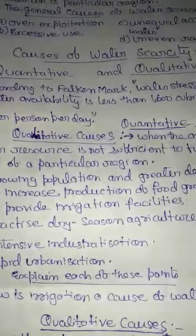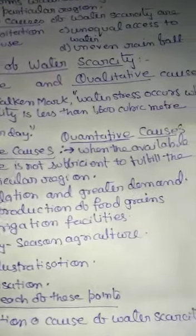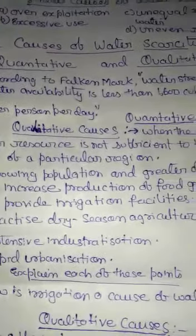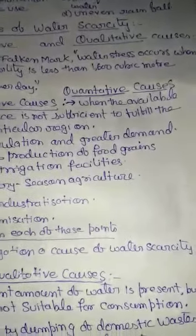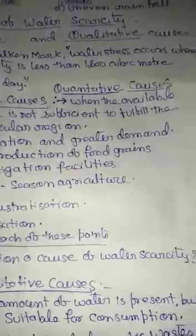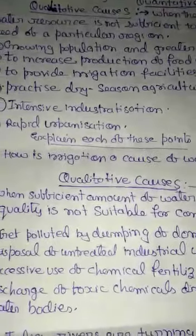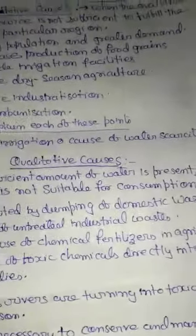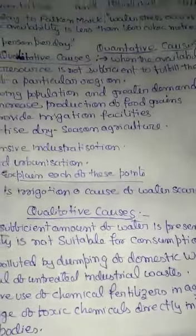Quantitative cause of water scarcity means when the available water resource is not sufficient to fulfill the needs of a particular region. Qualitative cause of water scarcity means when sufficient water is present but the quality of water is not suitable for consumption. We will discuss quantitative and qualitative causes of water scarcity in the next chapter. Thank you.